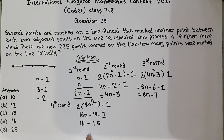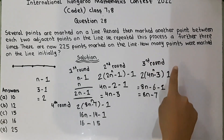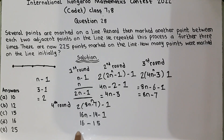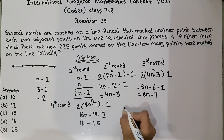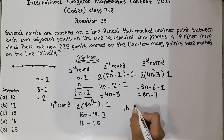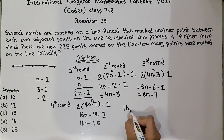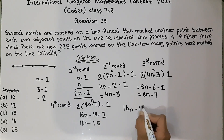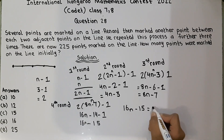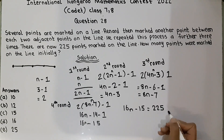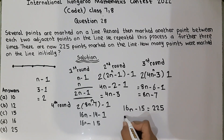We will stop at the fourth round because he repeated this process four times. We know that sixteen n minus fifteen is equal to 225. We have created an equation, so we just solve it. Moving minus fifteen to the other side: sixteen n equals 225 plus fifteen, which equals 240.